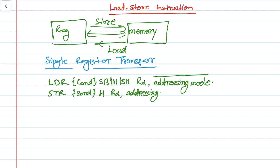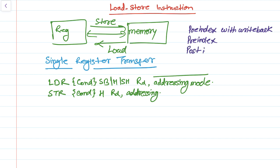There are many types of addressing modes in our microcontroller: pre-index with write back, pre-index, and post-index. So the first one is pre-index with write back, the second is pre-index only, and the third is post-index. These are the three types of addressing modes present in our microcontroller. We will discuss those later.